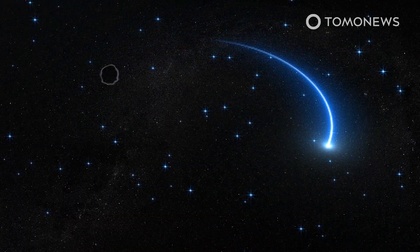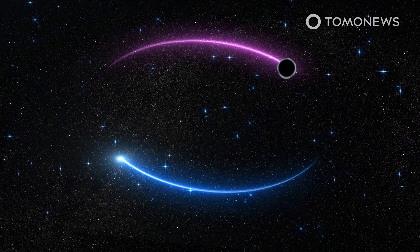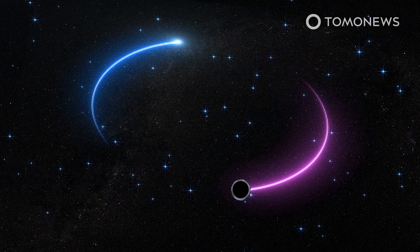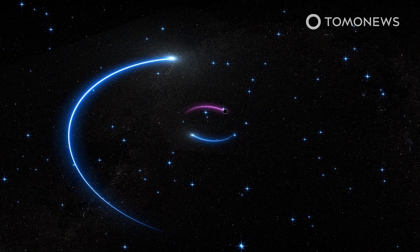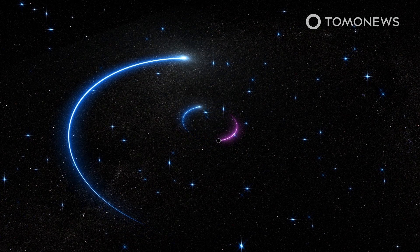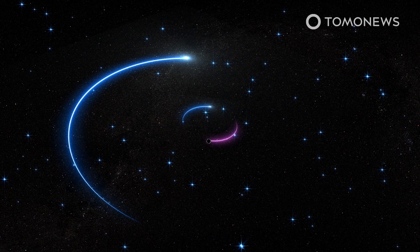However, the black hole of HR6819 exists peacefully with its stellar companions, and astronomers use the orbits of the two stars to infer that an object with four times the solar mass is in the system, which can only be a black hole.